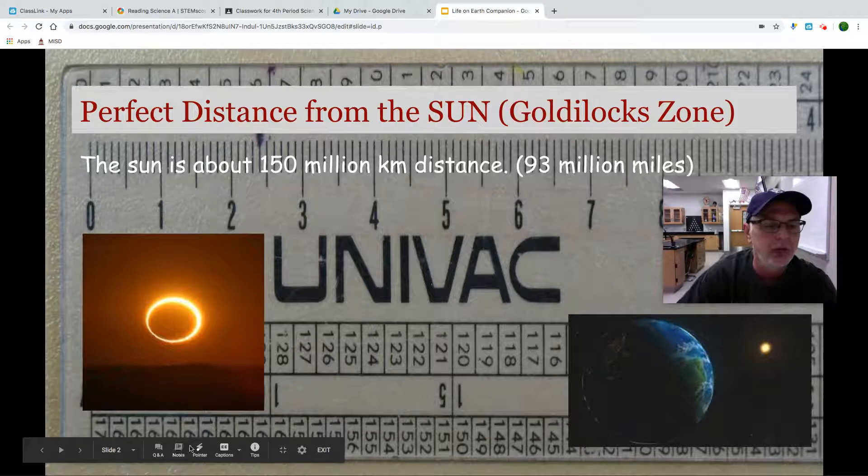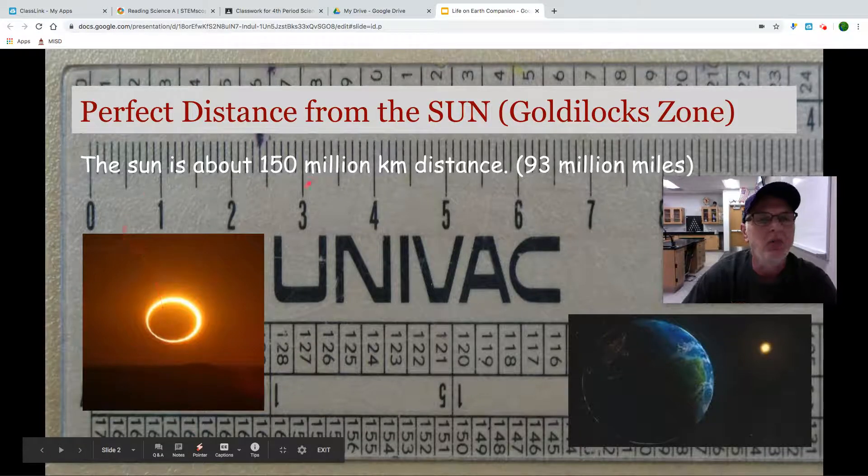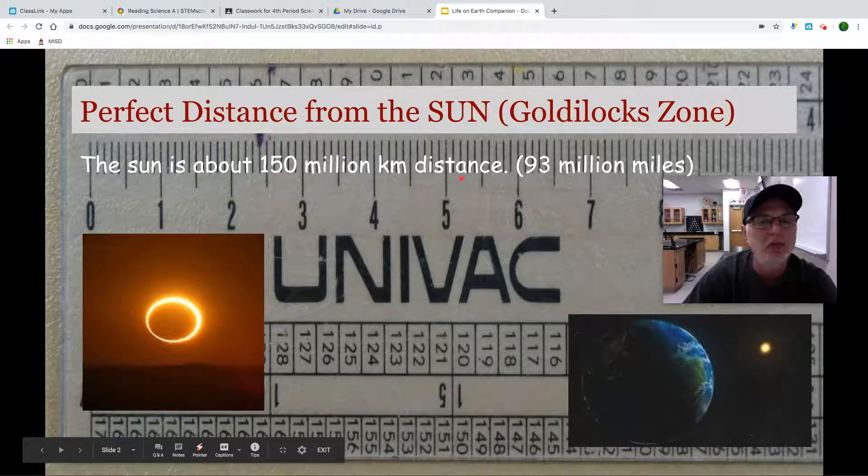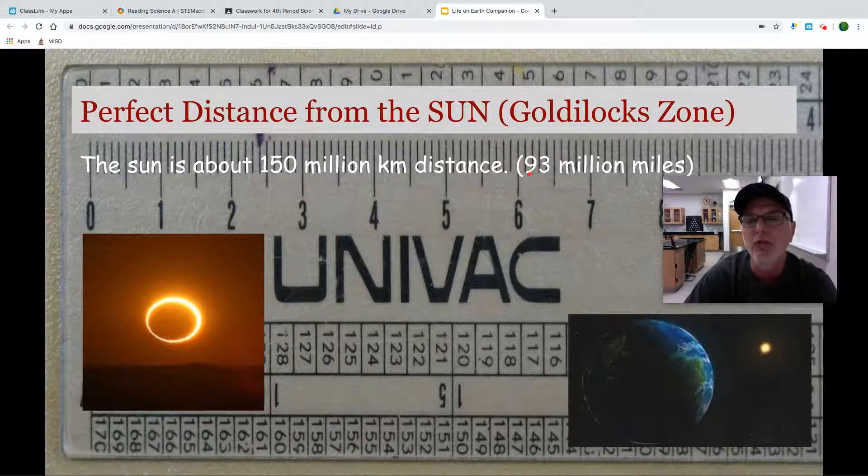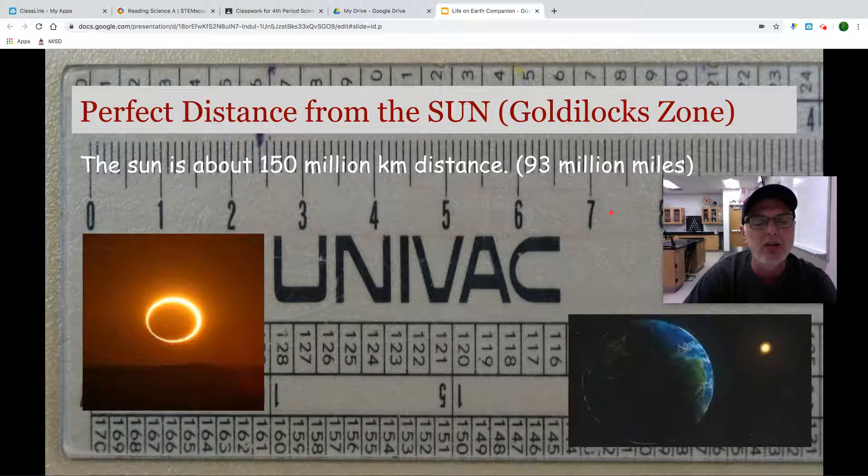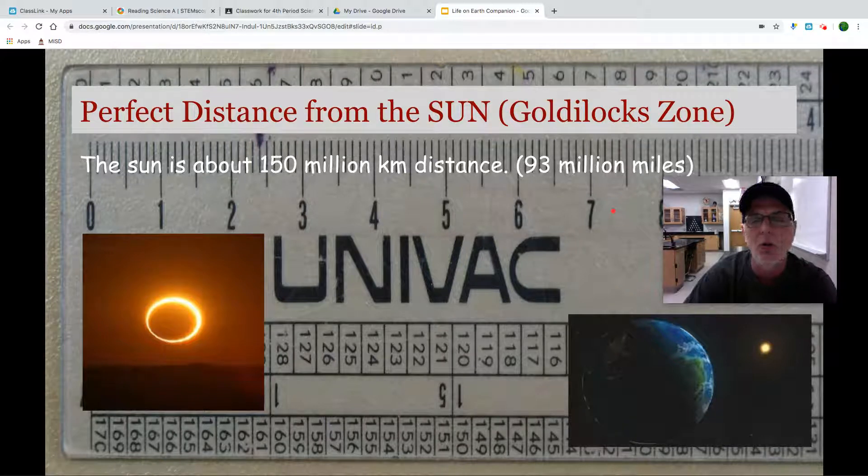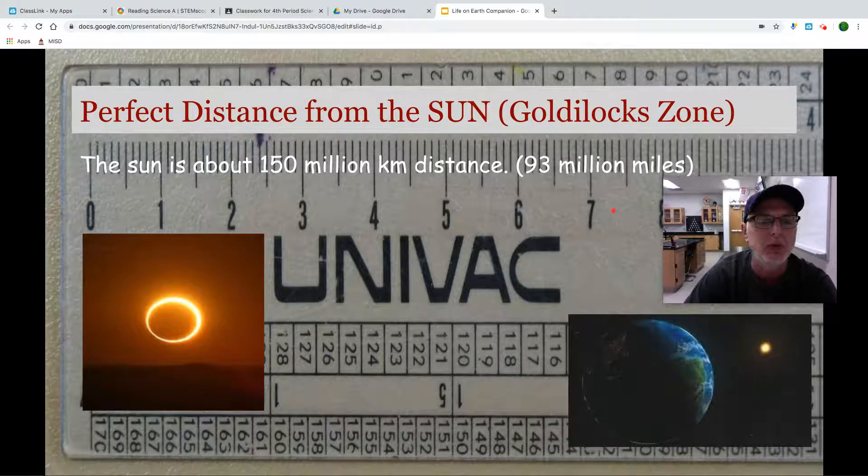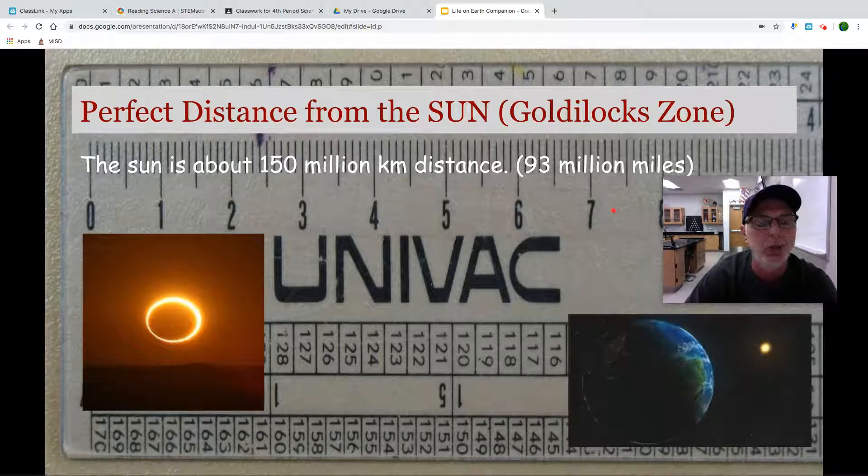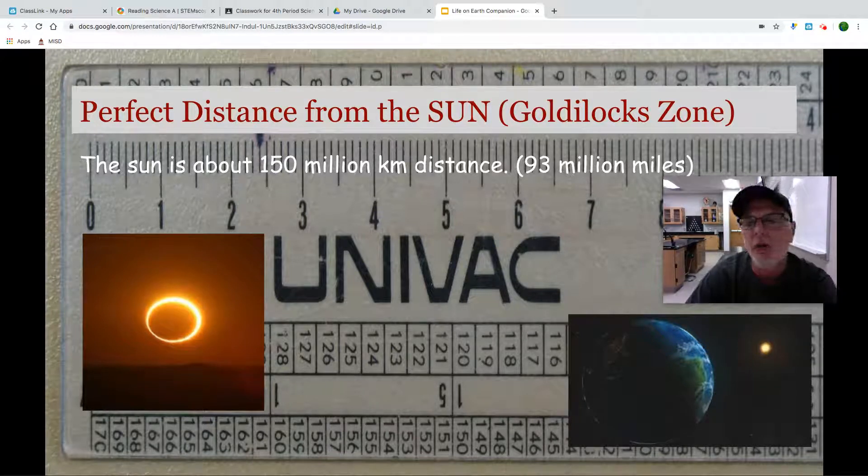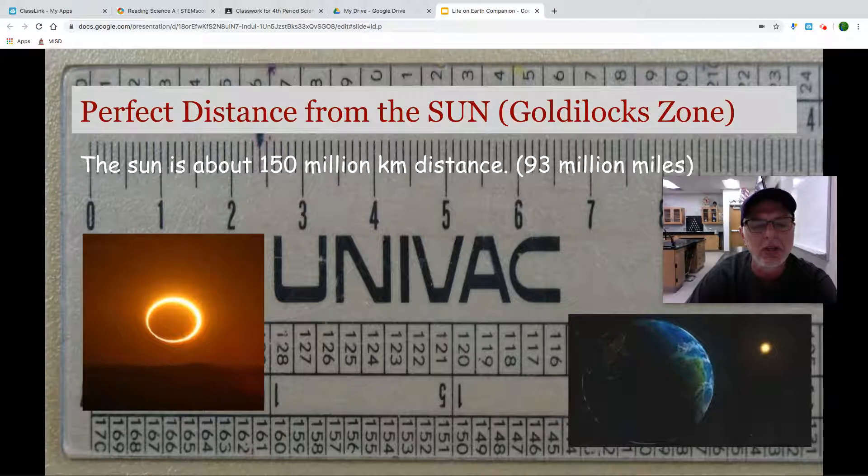Interestingly enough, we're about 150 million kilometers in distance from the sun, which is equivalent to about 93 million miles. This varies throughout the course of the year because our orbit is what is called elliptical. It is an oval shape, not a perfect circle.